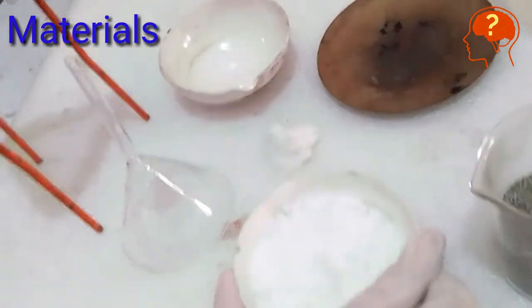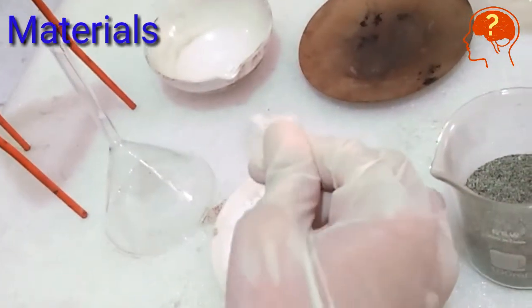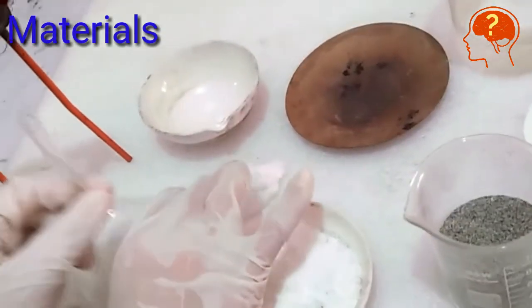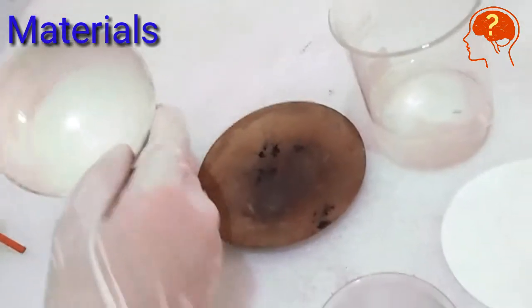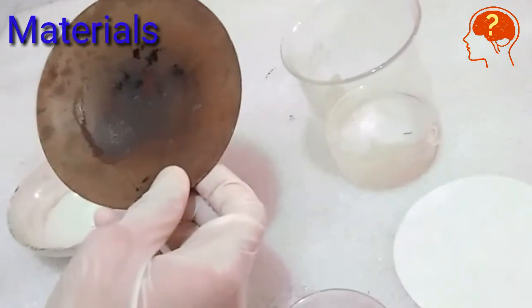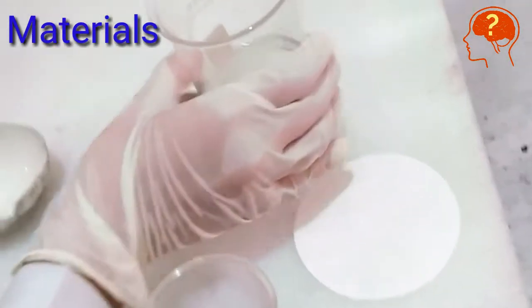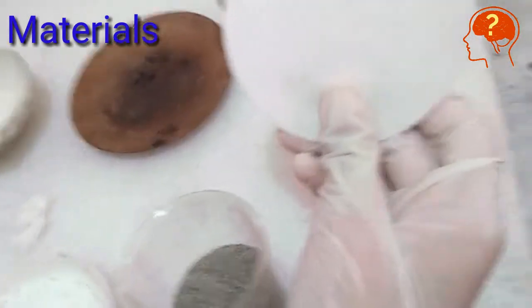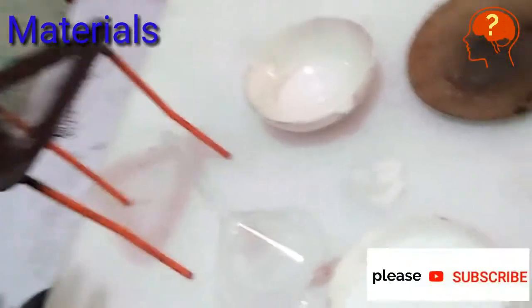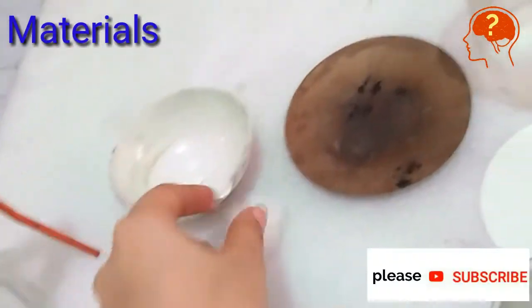naphthalene (it should be finely powdered), funnel, china dish, sand bath, water, filter paper, tripod stand, and cotton.